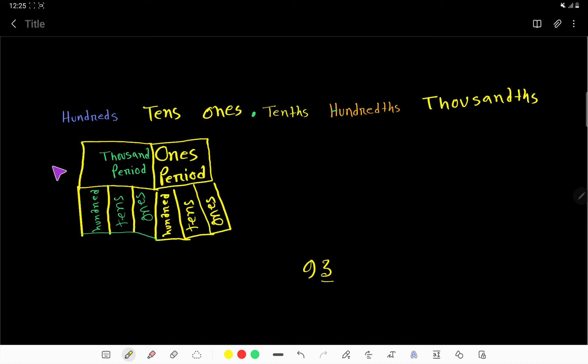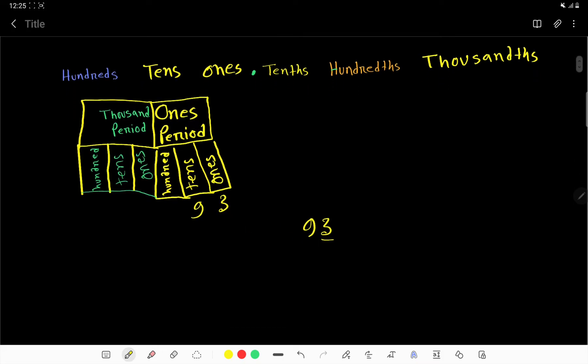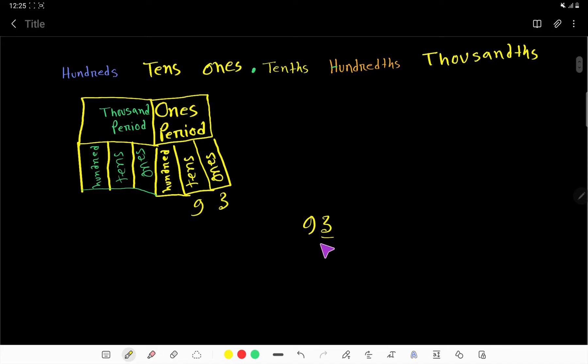So we can say that 3 is the digit in the ones place and 9 is the digit in the tens place, right? So the place value of 3 will be its face value. The face value of 3 is 3.